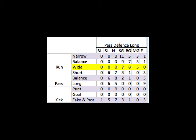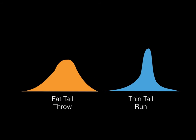What we're basically making is yards gained as the random variable. If you choose to throw, that's kind of risky — there's a bit of volatility in it, more of a fat tail distribution. Whereas if you choose to run, it's more of a thin tail — it's safer, but you're not going to make as many yards. This is just an assumption I'm making with regards to American football.